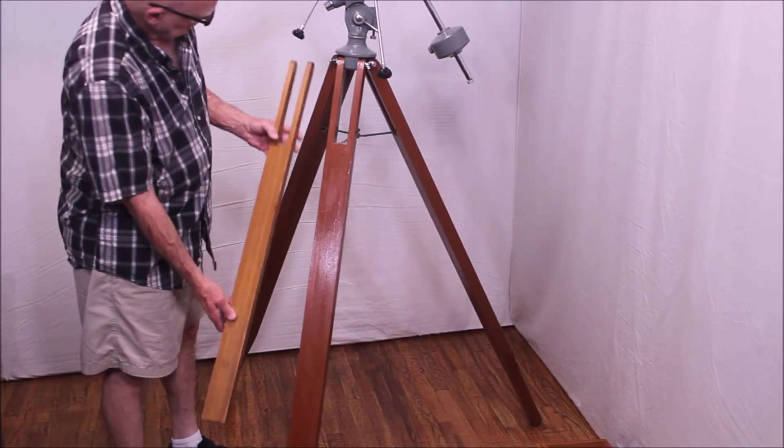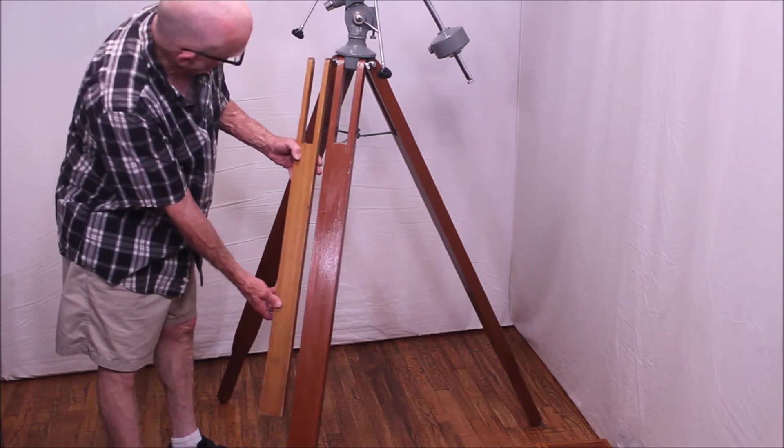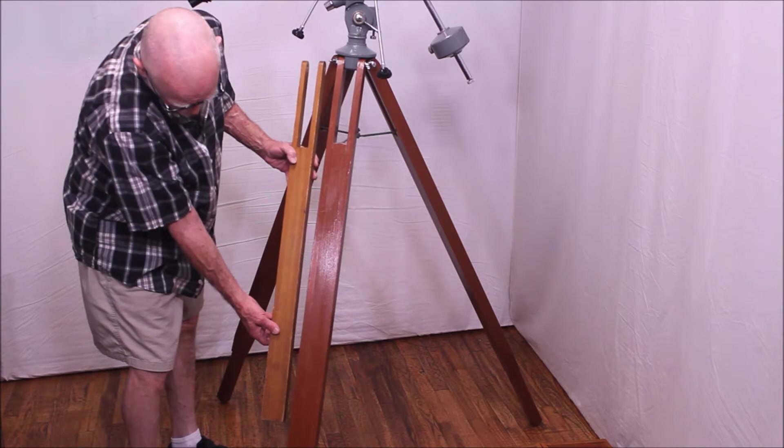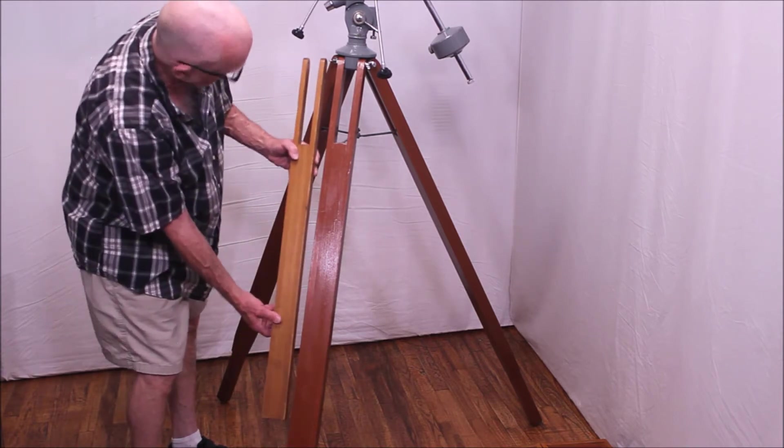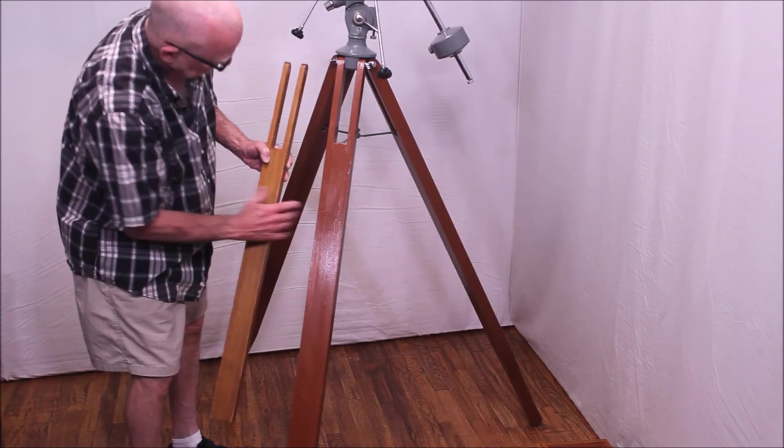This is one of the original legs from the scope and as you can see for whatever reason I have no idea why it had been amputated. I suppose probably it got broken or maybe somebody just wanted to put it on a table of some sort. I had no clue. Anyway they certainly weren't long enough so that's why I had to make these replicas.